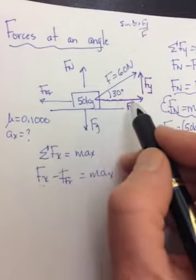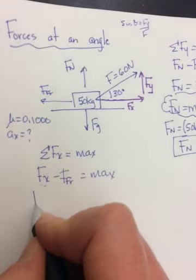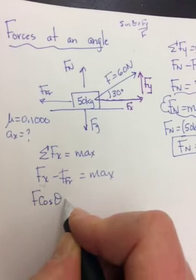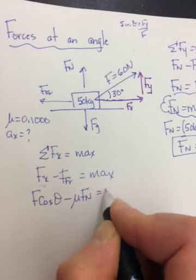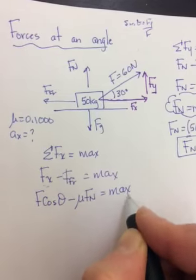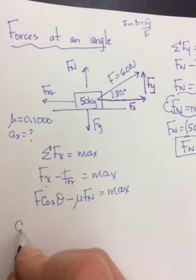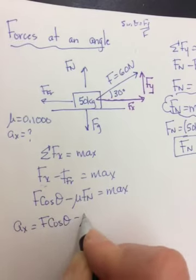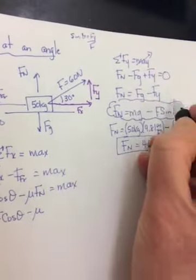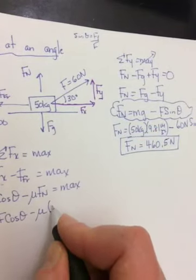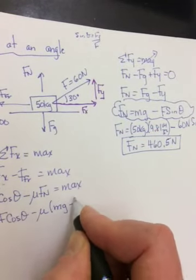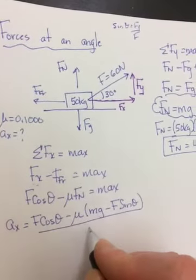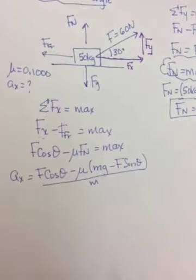So what is fx? It's the adjacent side. So it should be f cos theta. And what is friction? It's mu fn, equal to max. And what are we trying to solve for? So we're going to divide both sides by m. So it will be f cos theta, minus mu. And if you hadn't filled your numbers in, then you would do brackets, mg minus f sin theta. Close the brackets, and then divide by m. And now fill in your numbers.